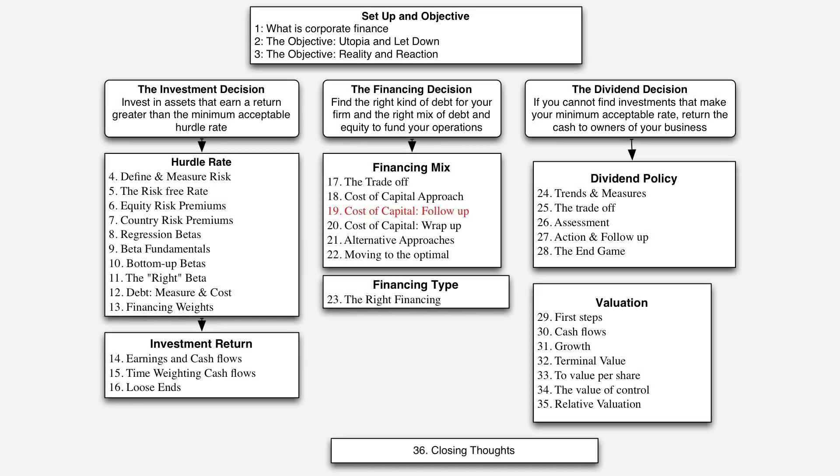Now that we've talked about using the cost of capital approach to come up with the optimal debt ratio — that's basically what session 18 was about — let's follow up on that concept. What do you gain by moving to that optimal debt ratio, the point at which your cost of capital is minimized? The answer might seem obvious, but as you'll see in this session, it's not always that much of a slam dunk.